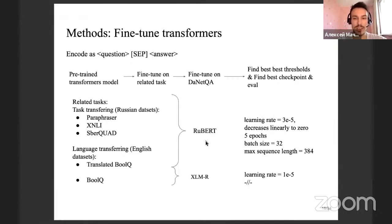We divide related tasks into two groups: task transferring and language transferring. All task transferring datasets are Russian, and tasks are related but different from yes/no question answering. There are two tasks: Paraphraser—the task is to find if two phrases have the same sense; then XNLI—the task is to decide whether one sentence is entailment, contradiction, or not related to another; and a question answering dataset from Sberbank, which is a classic QA dataset for the Russian language.